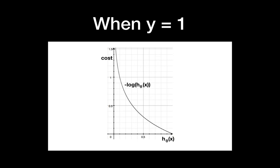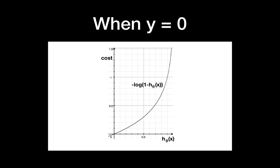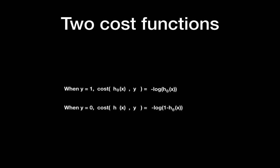What is log loss? When y = 1, we use the function −log(h(X)). If the hypothesis output is 1, it matches y exactly so the cost is 0. If the hypothesis moves further from 1, the cost increases — penalizing the wrong prediction. When y = 0, we use −log(1 − h(X)). If the hypothesis output is 0 there is no cost, and if it moves further from 0 the cost increases. So we have two cost functions: one for y = 1 and one for y = 0.